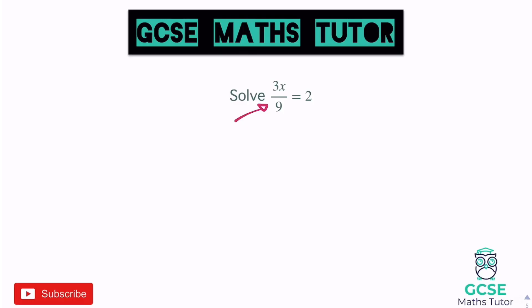To remove the divide by 9, we multiply both sides by 9. The top stays as 3x — we're not multiplying it by 9 twice, just reversing the divide. On the right, 2 times 9 is 18. So we now have 3x equals 18, and dividing by 3 gives x equals 6.